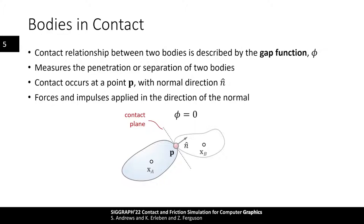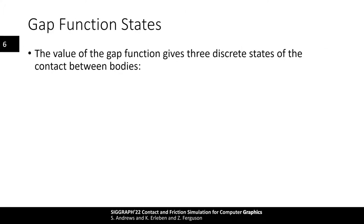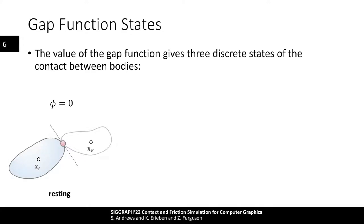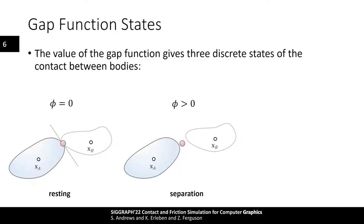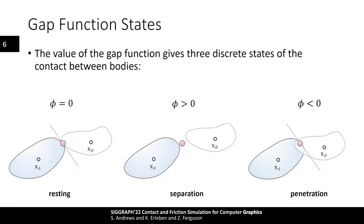The contact normal is also the direction in which we want to push in order to maintain a penetration-free configuration of the bodies. The gap function gives us three distinct cases to consider. First, resting contact, where the bodies are just touching and the gap function is zero. Second, separation, where there is space between the bodies and the gap function has a positive value. Finally, penetration, where the bodies overlap and the gap function is negative.